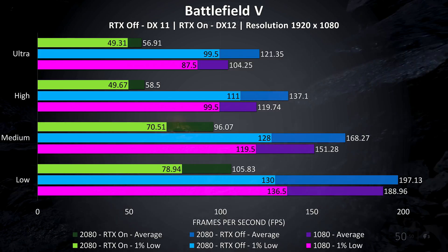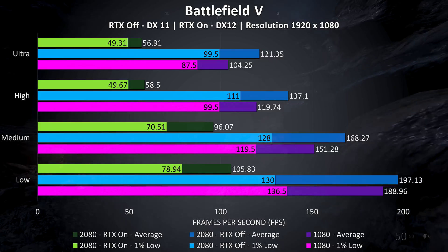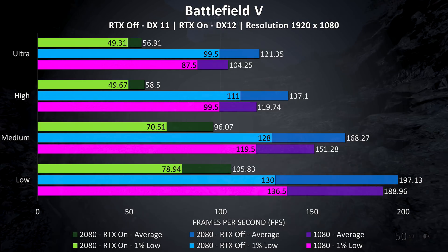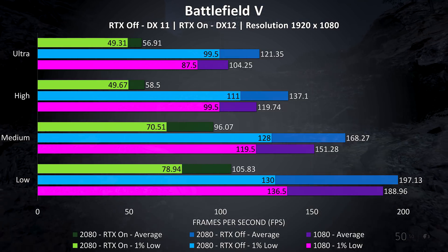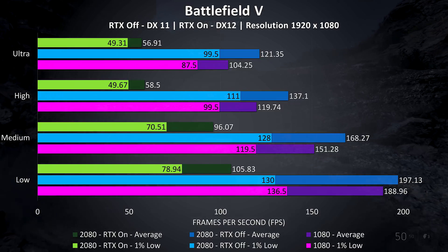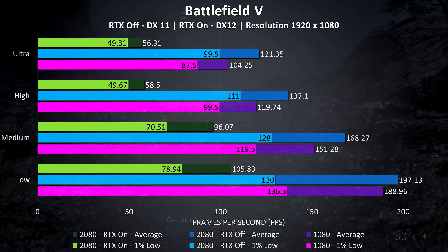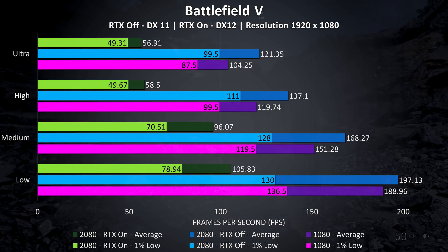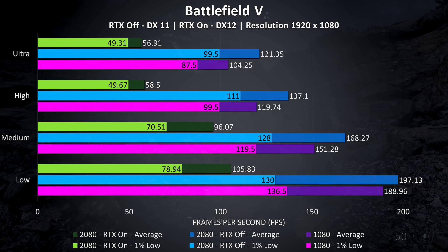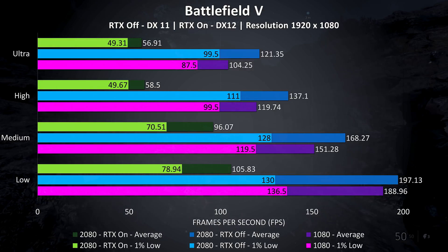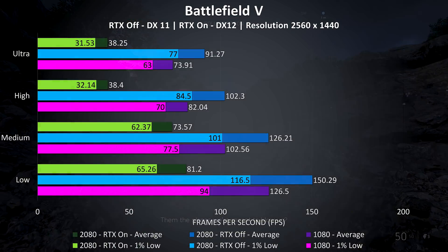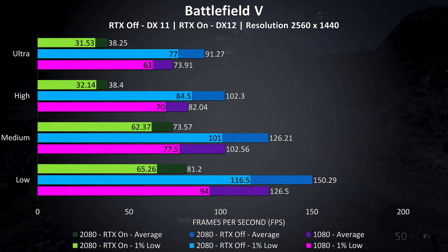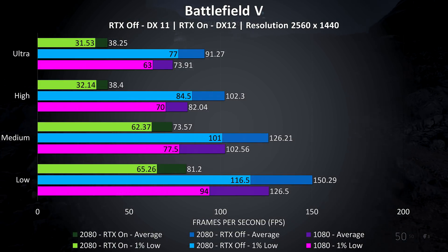With RTX off I've tested with DirectX 11, and in all following graphs the 2080 results are in blue while the 1080 results are in purple. At 1080p with ultra settings the 2080 is performing 16% better than the 1080 in terms of average frame rate, and 13% better for 1% low.